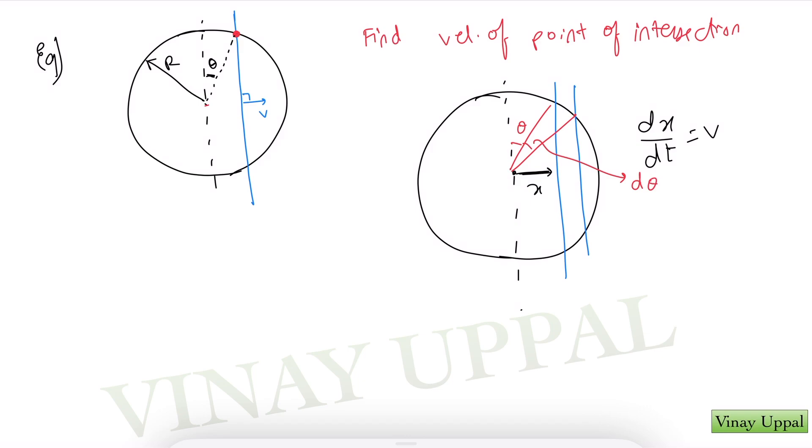So the displacement, this red arrow, will be the displacement of the intersection point. Can I write that as r d theta? So basically what do I want? I want the velocity of the point of intersection, so displacement by time dt. So I want basically r d theta by dt. This is what I want.